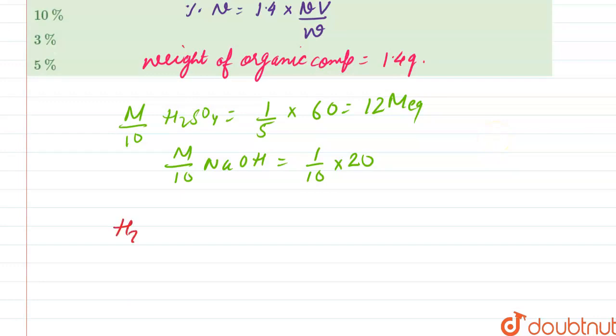So we can actually say the H2SO4 used against NH3 is equals to 12 minus 2 which is equals to 10 milliequivalent.